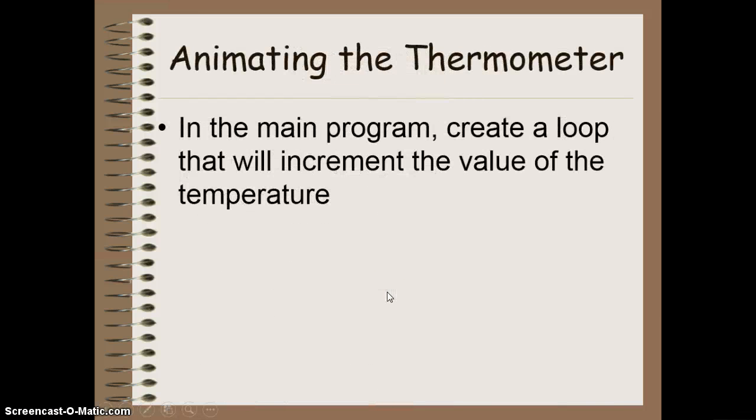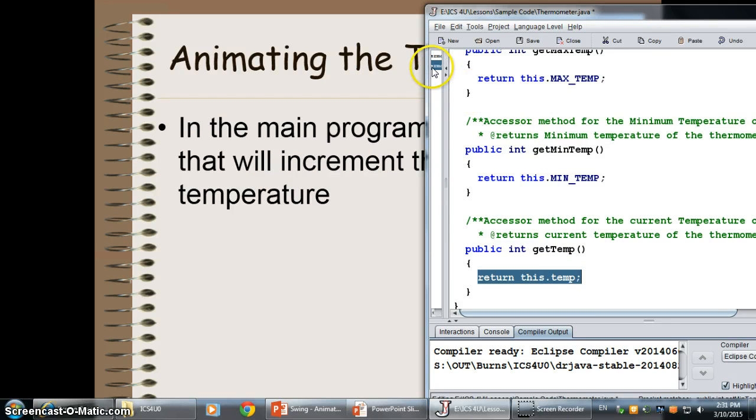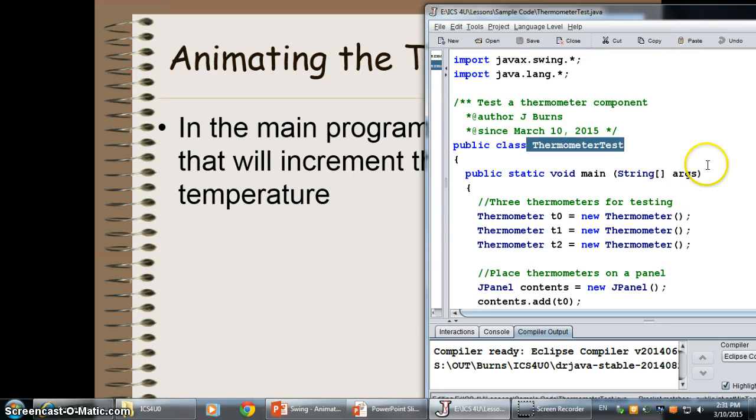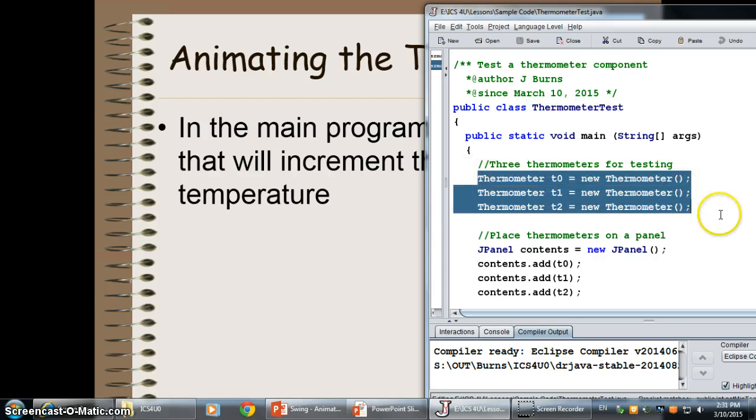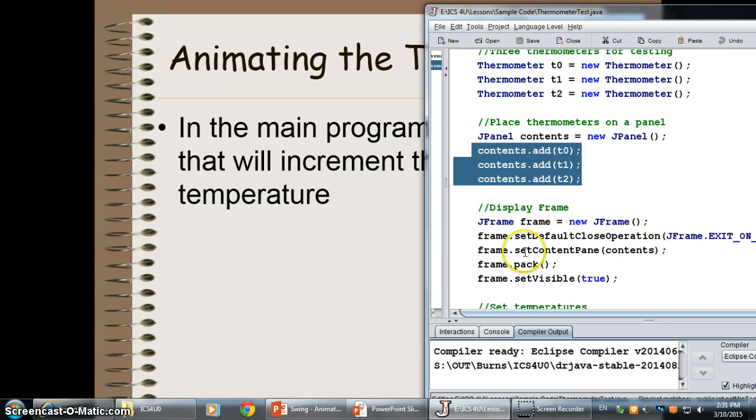So, now what I want to do is I want to actually be able to draw my thermometer in my component and animate it. To do this, I'm going to have to make the repetition structure in my main program that's going to increase the value of the temperature. So, in my thermometer class, I'm going to make my thermometer test. I'm going to make three thermometers, add them all to my panel, and display them.